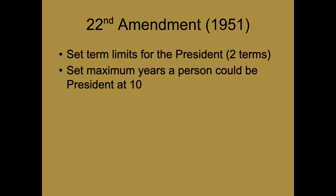The 22nd Amendment, passed in 1951, set term limits for the president. It used to be you could be elected unlimited times. The only president elected more than twice was Franklin Roosevelt — elected in 1932, 1936, 1940, and 1944 — and he died in 1945 during his last term. In 1951 we changed the Constitution, saying that two terms is as much as you can get.